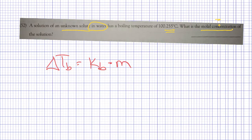Let's just real quick talk about number 52. I don't think this one's too bad. It says a solution of an unknown solute in water - the fact that it's an unknown solute doesn't matter. We're not going to have to look anything up and the identity of the solute doesn't matter.